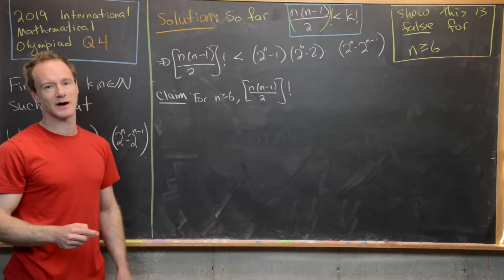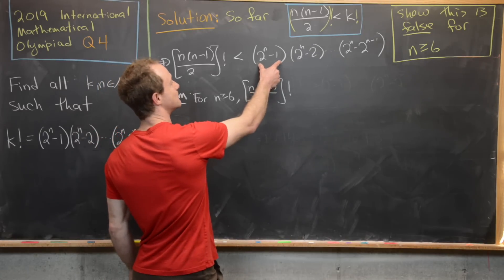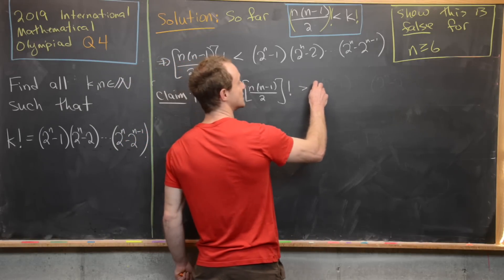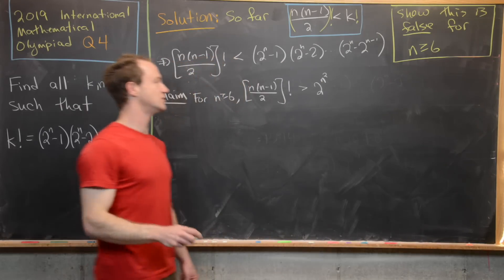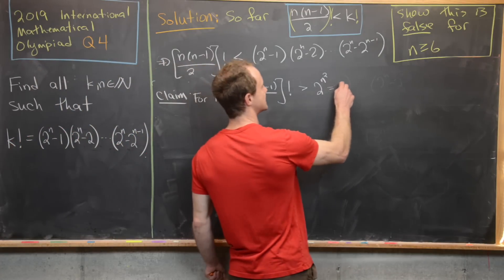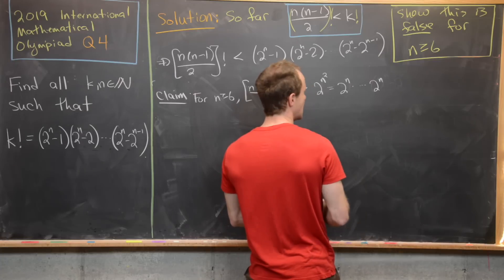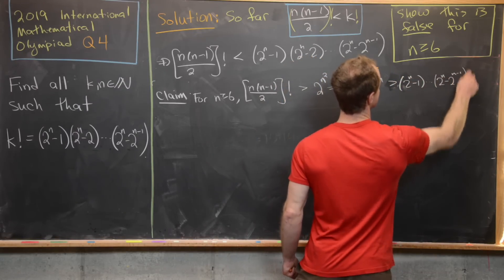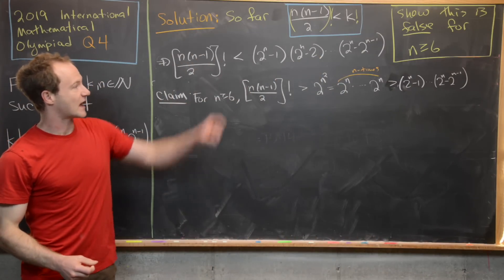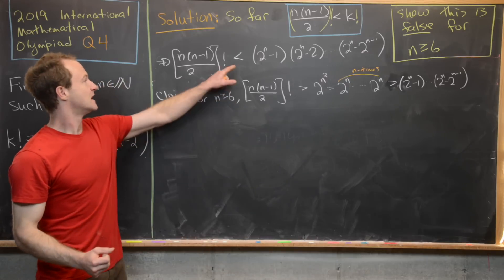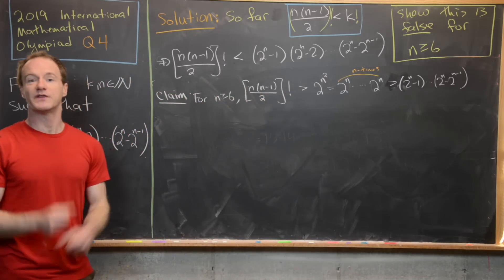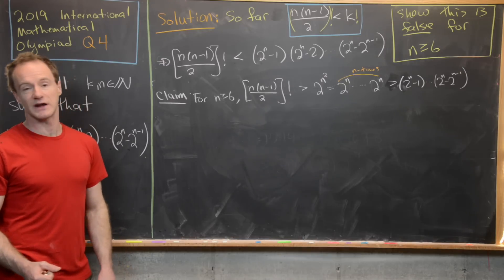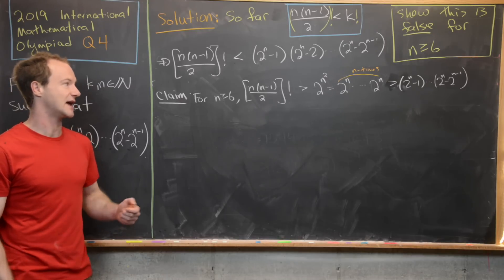It's hard to work with the right hand side product directly, but we can make something bigger than it by replacing all terms with two to the n. That creates two to the n multiplied n times, giving us two to the n squared. So the claim is: two to the n squared is bigger than two to the n minus one all the way down to two to the n minus two to the n minus one. If n is bigger than or equal to six and we have a solution, then both inequalities hold simultaneously — but those are contradictory. So if we prove this claim, there will be no solution for all n bigger than or equal to six, and then we just need to check n equals one, two, three, four, and five by hand. We'll prove this by induction, with base case n equals six.